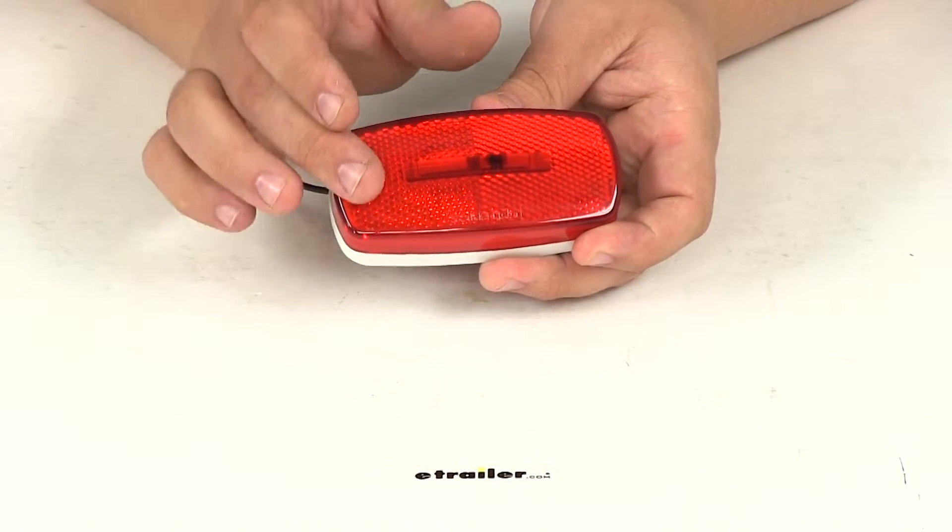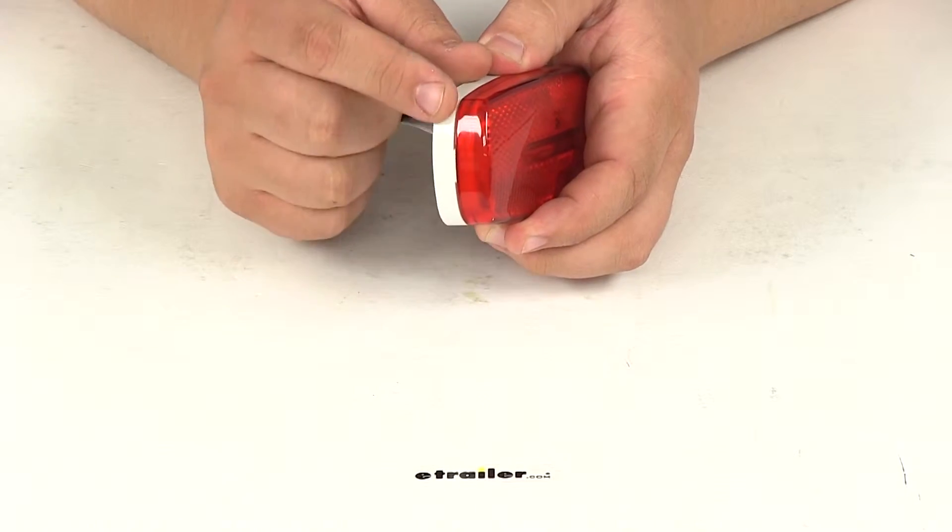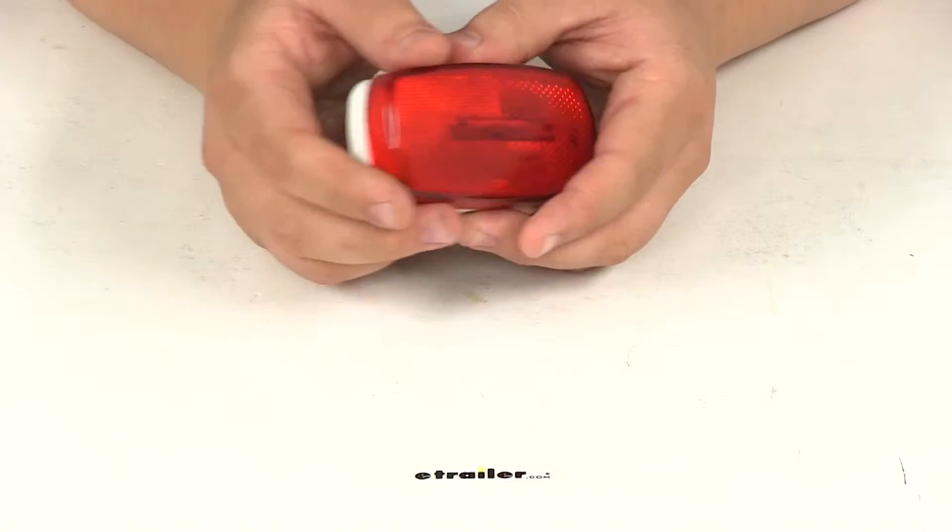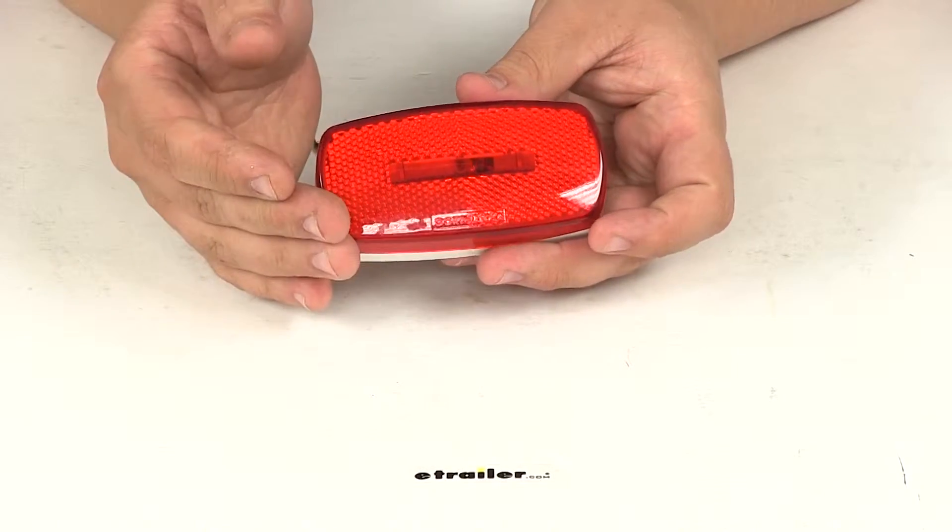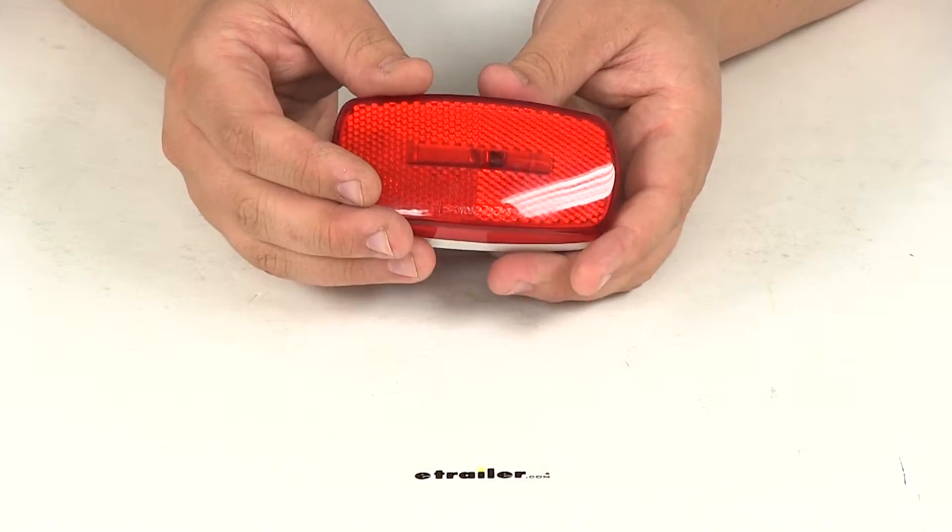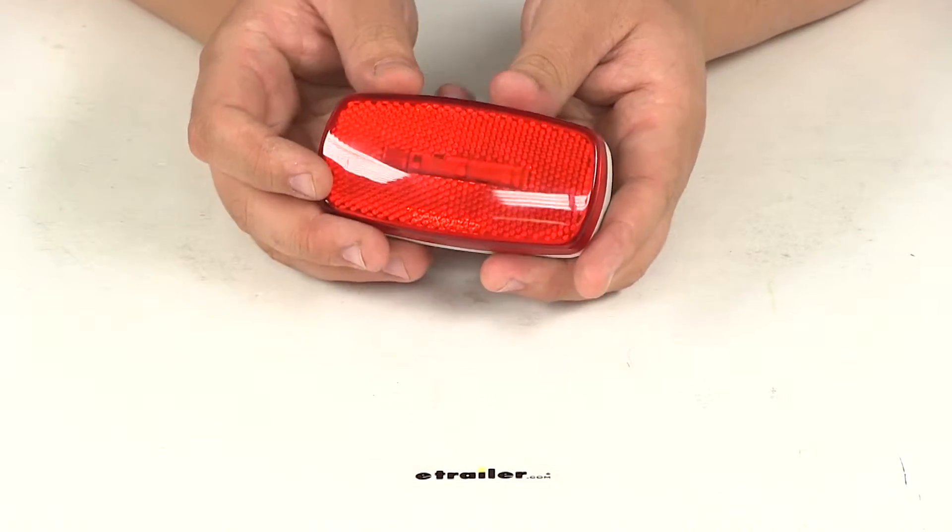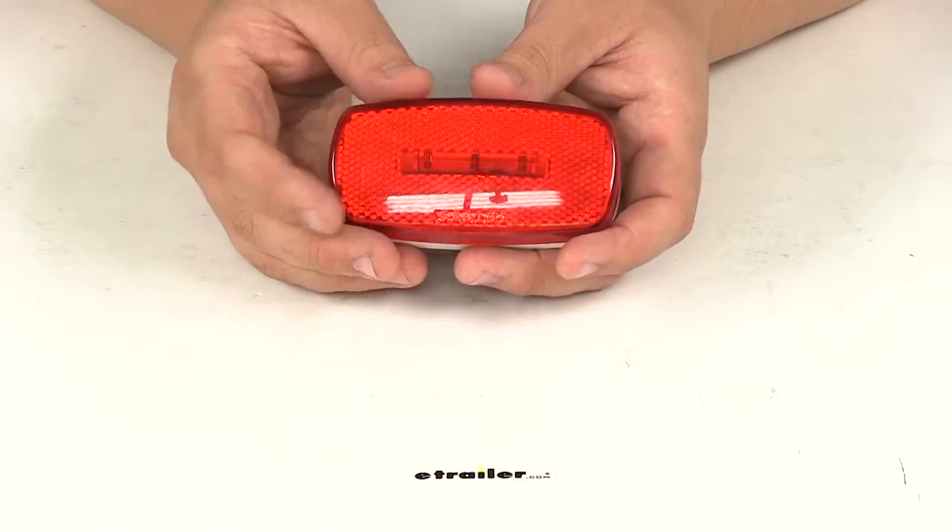It's going to have a nice red lens with a really nice ABS white plastic base. The red lens is going to feature that Reflex Reflector so that's going to eliminate the need for a separate reflector in order to meet DOT requirements and be Department of Transportation compliant.